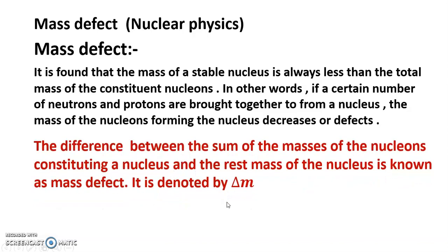The difference between the sum of the masses of the nucleons constituting a nucleus and the rest mass of the nucleus is known as mass defect. It is denoted by del m.